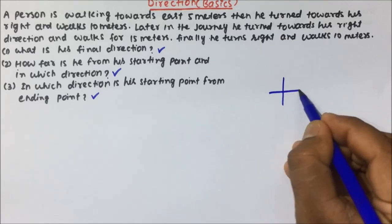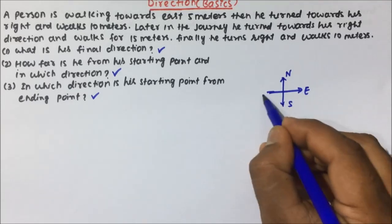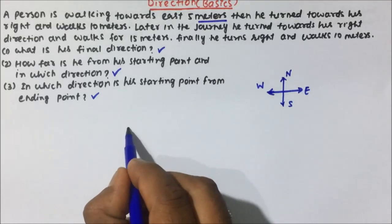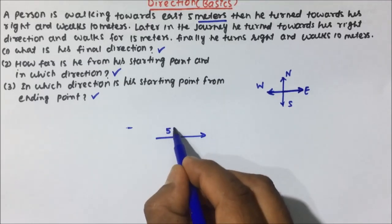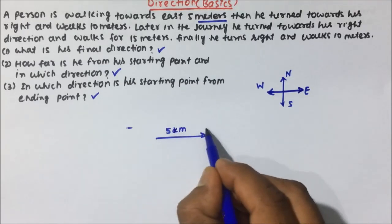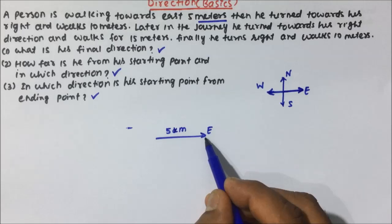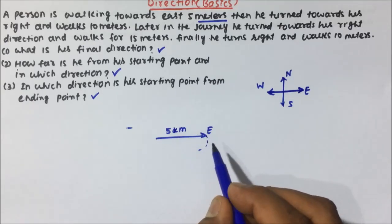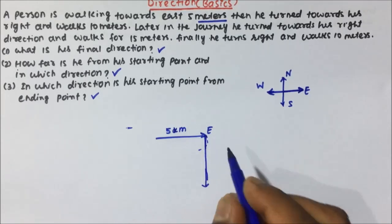For solving any question on direction, the first thing we do is draw the direction diagram — north, east, south, and west. Now, a person is walking towards east 5 meters, so the person is moving 5 meters in the east direction. Then he turns towards his right and walks 10 meters. For right, put your pen point here and see which direction clockwise goes — clockwise means this direction. So the person will move 10 meters in that direction (south).